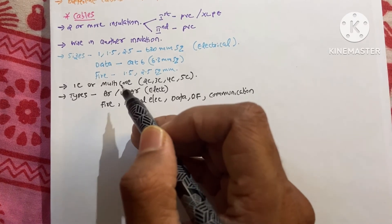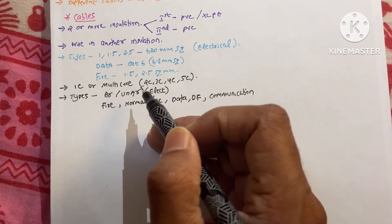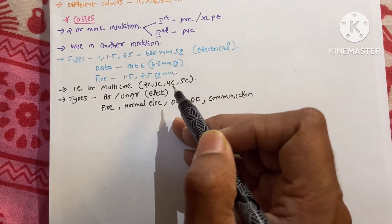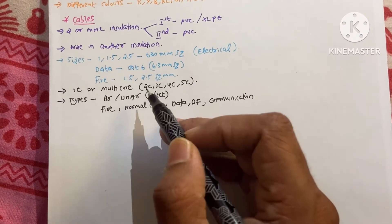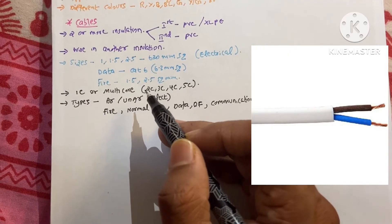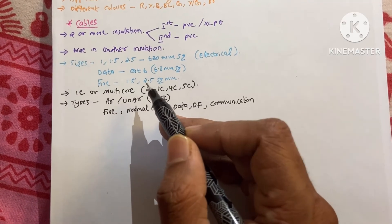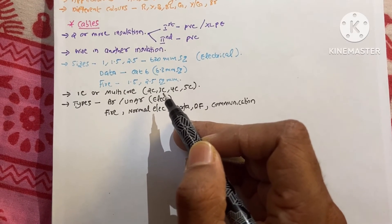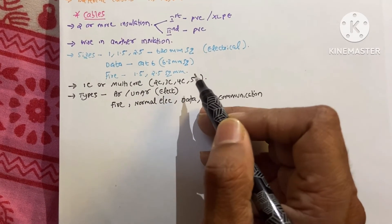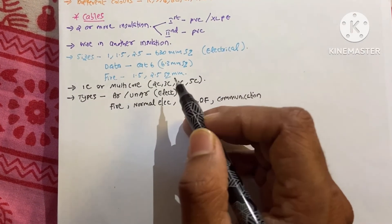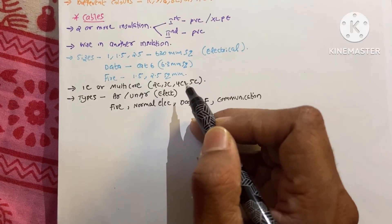And now about the cores. Single core and multi core cables are available. And the multi core means two core, three core, four core, five core like that. Two core means we can see two wires which is encapsulated by an insulation. Three core means three wires inside.